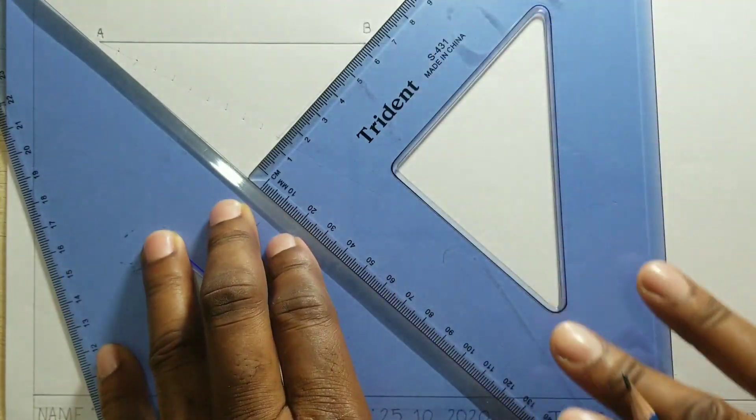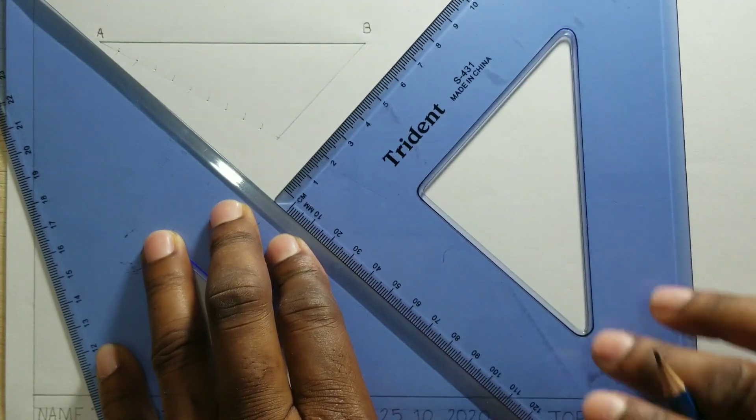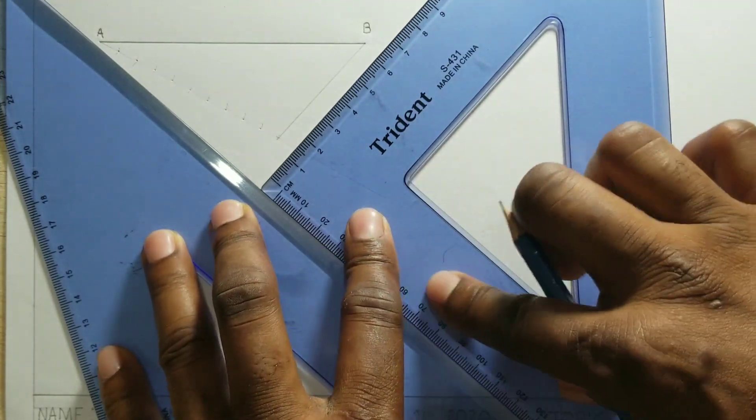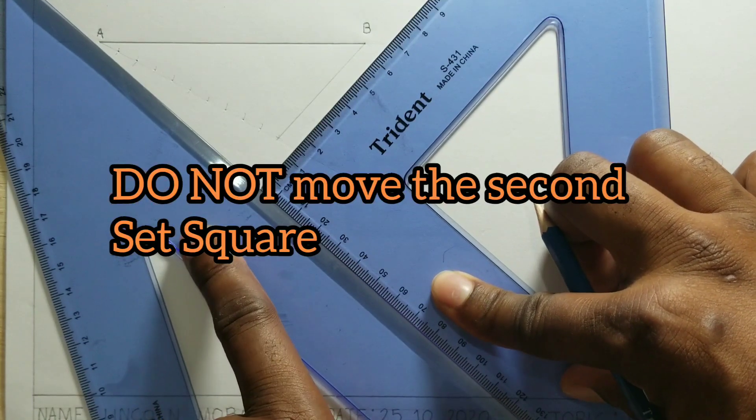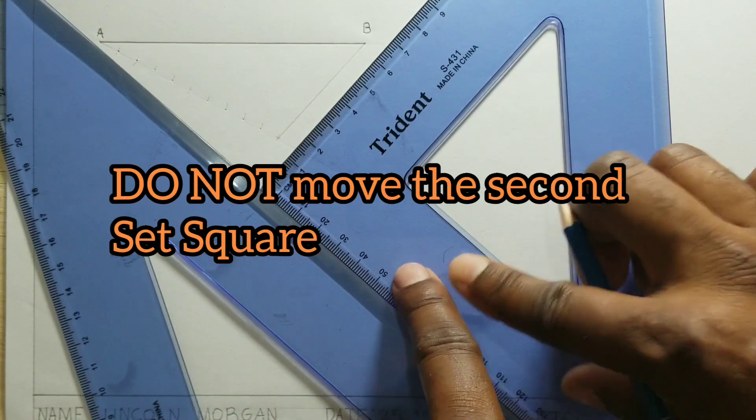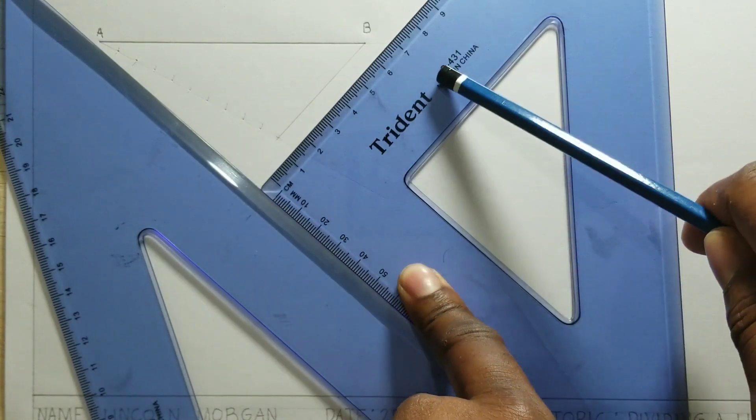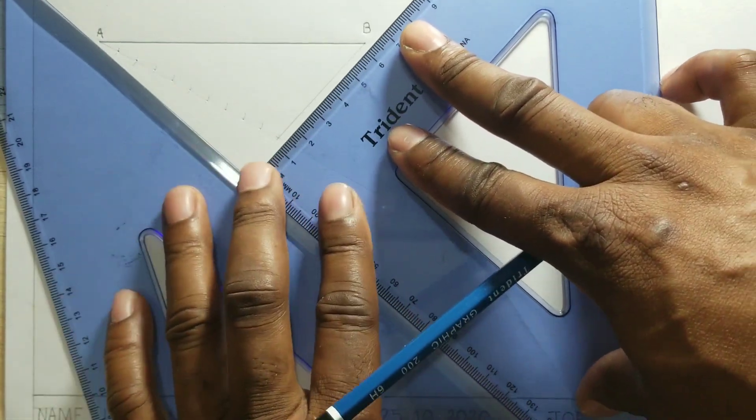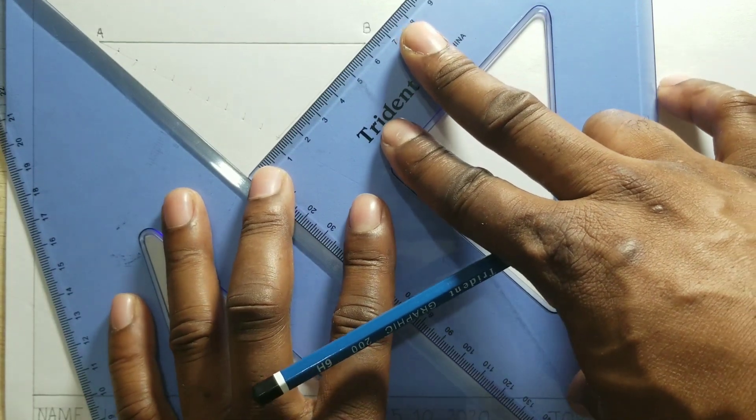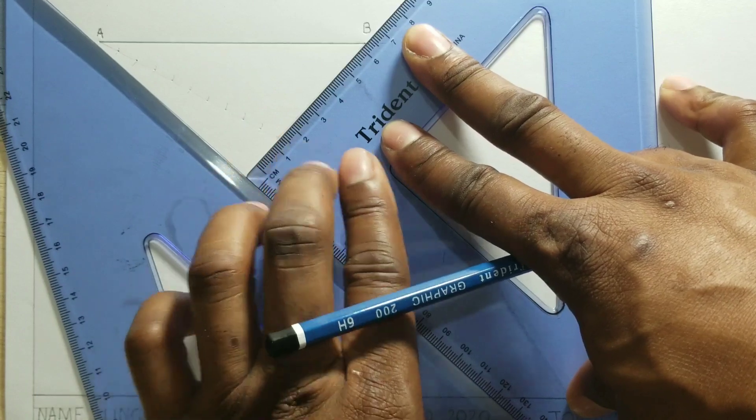And then we will be sliding this set square upwards to the marks. Now you have to be careful not to move this set square right here. You must not move it. The only set square that we will be moving is this one right here. So this one will be stationary and this one we will move along this set square. Ensure that your set square is along the 10th line.